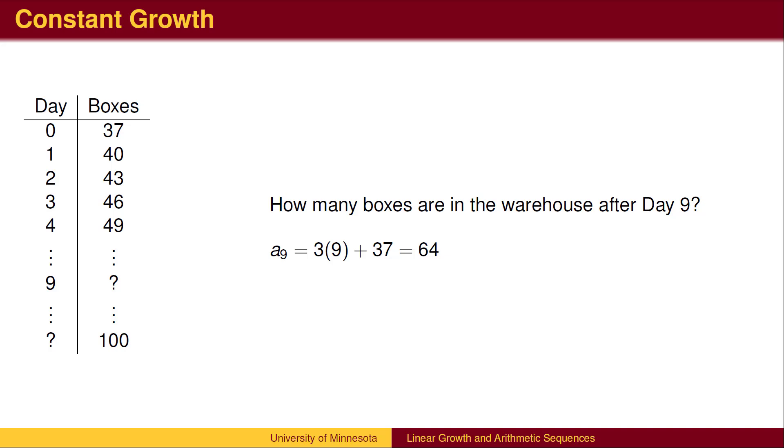Let's return to the original questions. How many boxes do we have after day 9? We start at 37, and then add 3 nine times to get 64. Using the recursive formula, this takes quite a bit of calculating. A quicker approach is to use the explicit formula. By plugging in 9 for n, we get the same answer of 64.